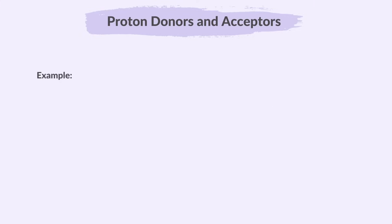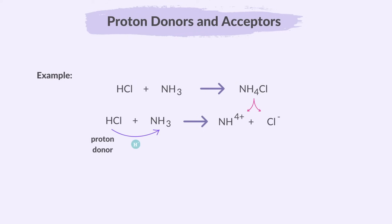Let's look at an example of an acid being a proton donor and a base being a proton acceptor. In this reaction, HCl donates a proton to NH₃. NH₃ accepts the proton and becomes NH₄⁺, or the ammonium ion, and Cl⁻ is the chloride ion.